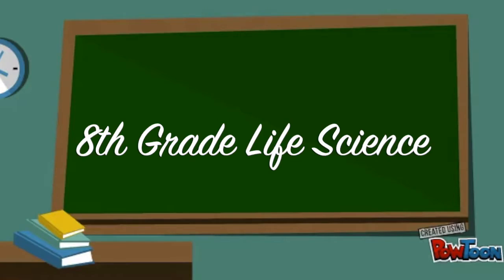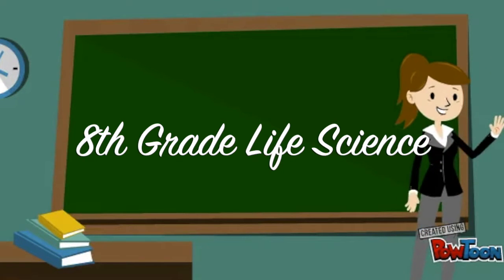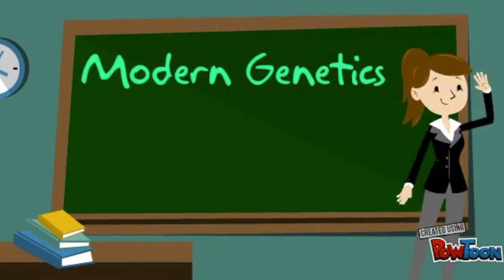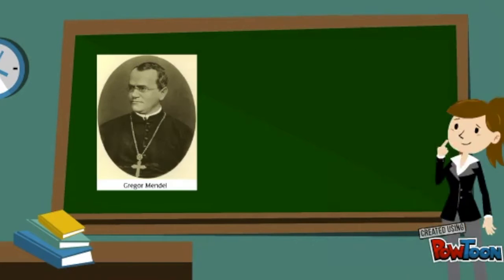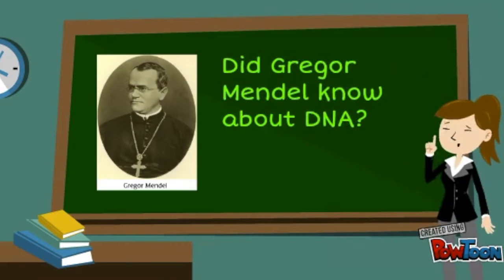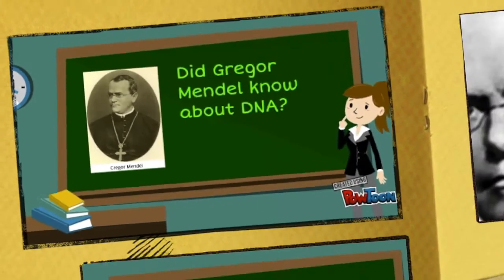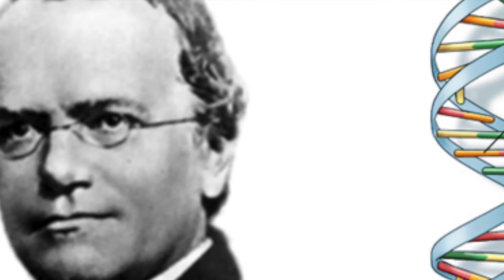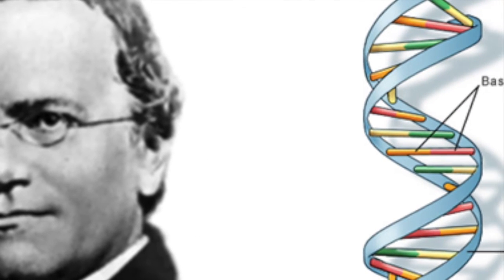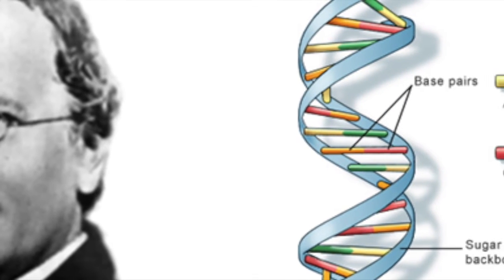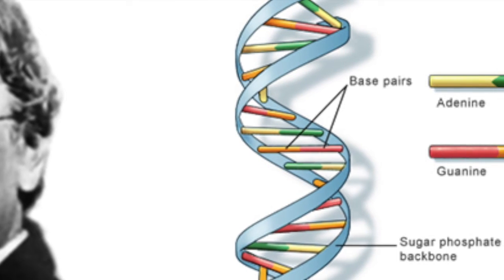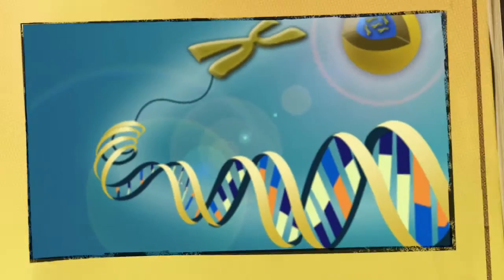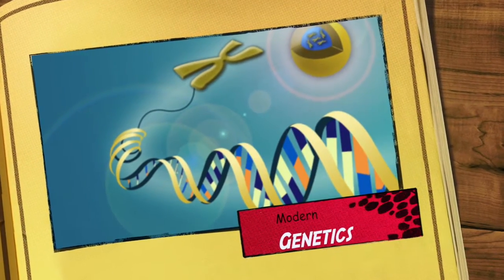Eighth grade life science: a look into modern genetics. Did Mendel know about DNA? No, people did not understand that DNA is our hereditary material until long after Mendel's time. Our modern understanding of DNA and chromosomes helps to explain how Mendel's rules worked — this is modern genetics.